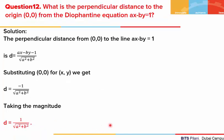Last question: what is the perpendicular distance from the origin (0,0) to the Diophantine equation Ax − By = 1? Using the formula from coordinate geometry for the perpendicular distance from (0,0) to the line, and substituting the point (0,0) for x and y, we get D = |−1| / √(A² + B²). Since distance cannot be negative, D = 1 / √(A² + B²). I hope the problems helped in your understanding of the topic. Thank you for watching.